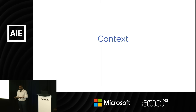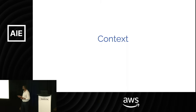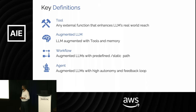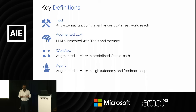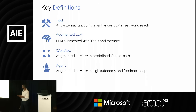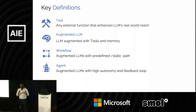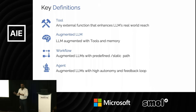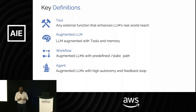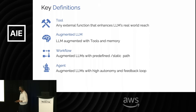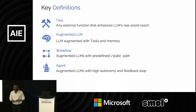Before that, we will cover some common context — just like agents, humans also need a common context. LLMs are limited by the knowledge at the time of training, so we enhance their functionality by adding tools. When you combine an LLM with tools and memory, we call it an augmented LLM. When you place this augmented LLM on a static and predefined path, we call it a workflow. And if these augmented LLMs have high autonomy and a feedback loop, we call it an agent.